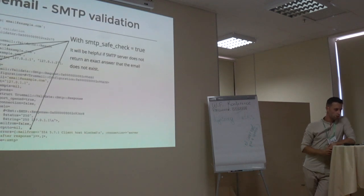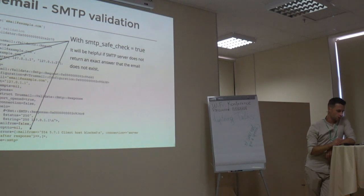Let's see what will happen with SMTP safe check set to true. We have SMTP errors but validation is successful. But why? Because SMTP server does not return an exact answer that the current email address does not exist. By default SMTP safe check is disabled and available for SMTP validation only.